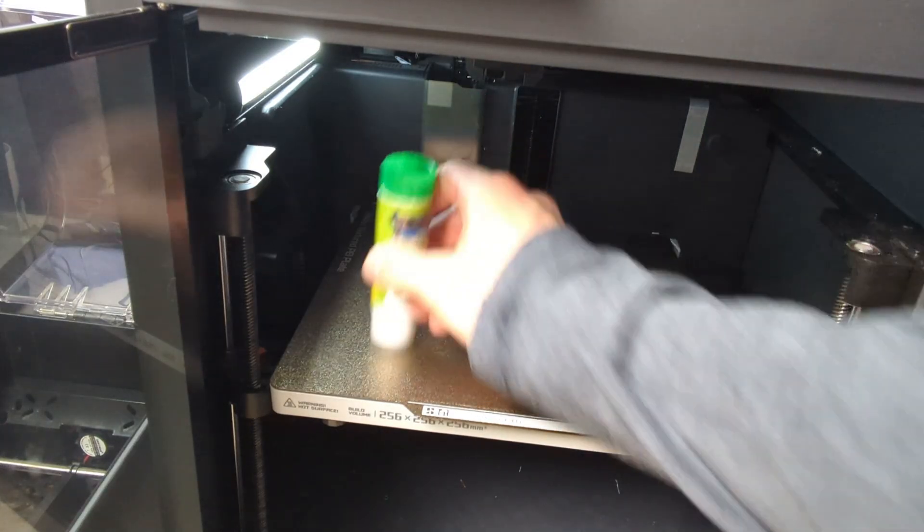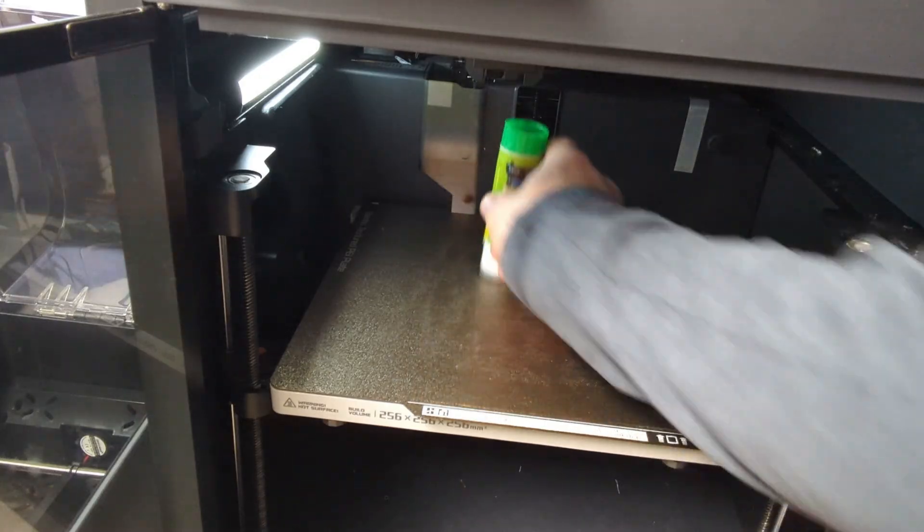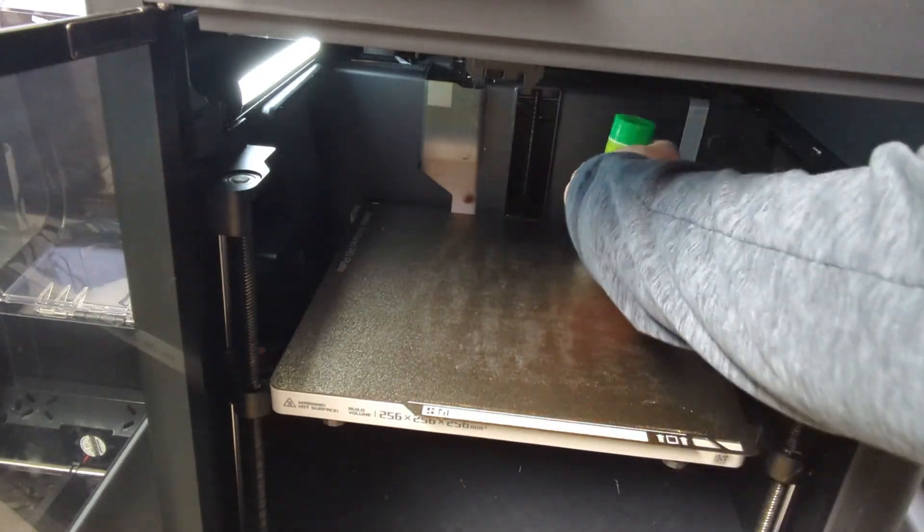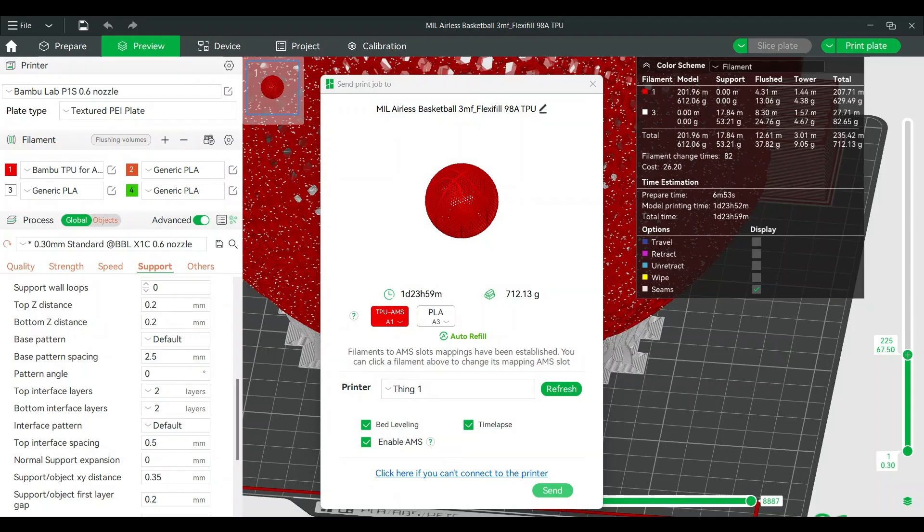Next I made sure to put a layer of glue on my printer bed, not only for adhesion but also as a release agent when it's done printing. And now that that was all done, all I had to do is send it over to my printer to actually print.